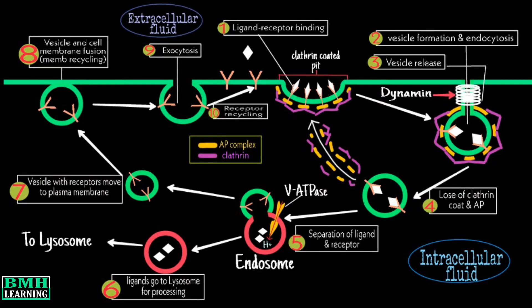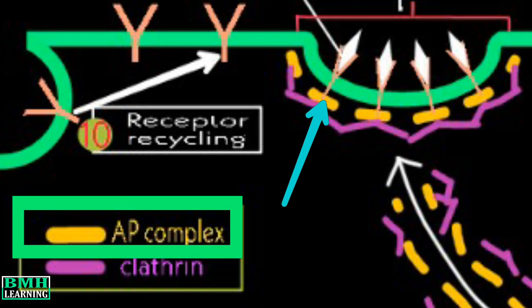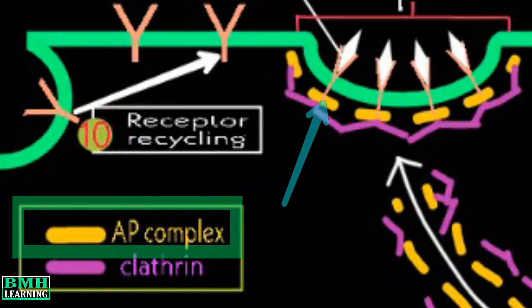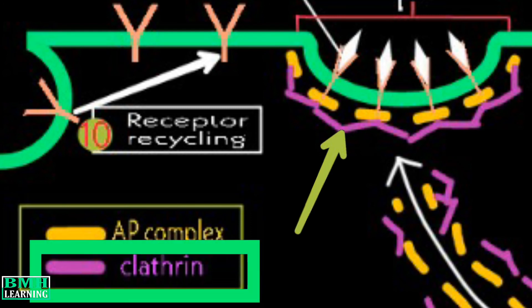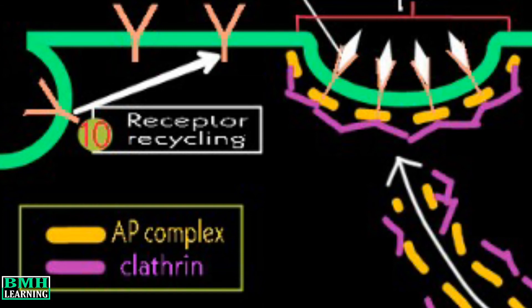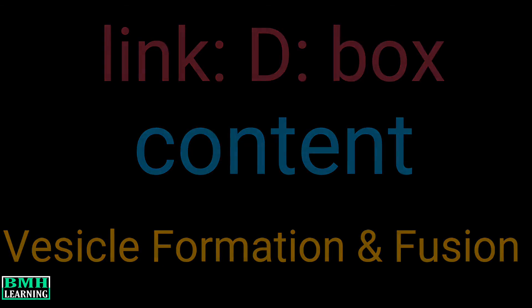The binding of the ligand to the receptor is mediated by adapter proteins, which are known as AP. For more details on how this is done, you can find the D-box content related to vesicle formation and fusion.